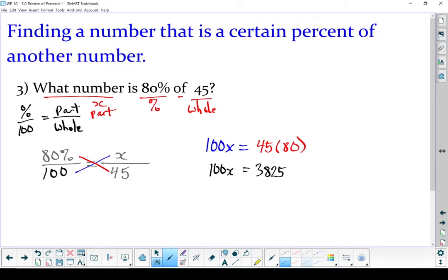Finish this question off. We're going to divide both sides by 100. x equals 38.25. Now that is not a percent. That is the part that we were trying to solve for. So it does not get a percent symbol on it. If I write it out in words, we've got 38.25 is 80% of 45.